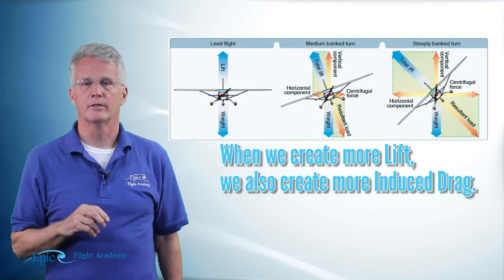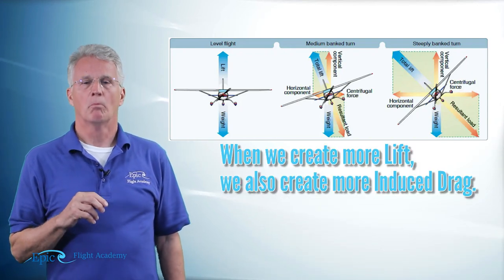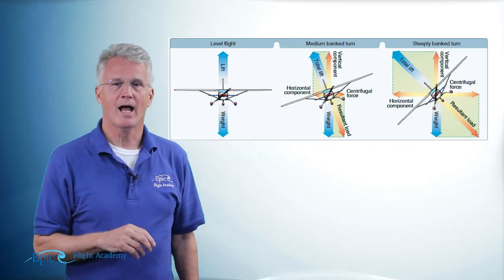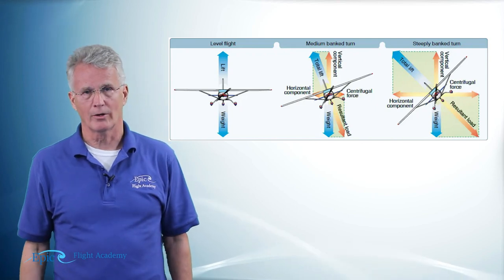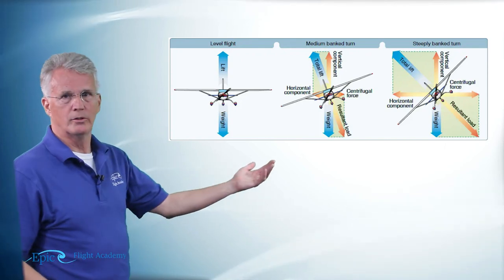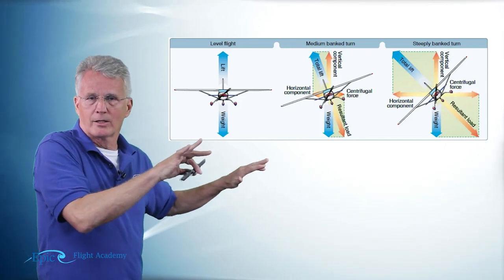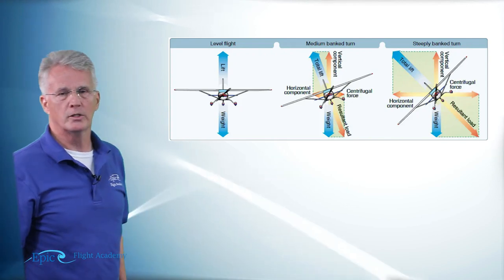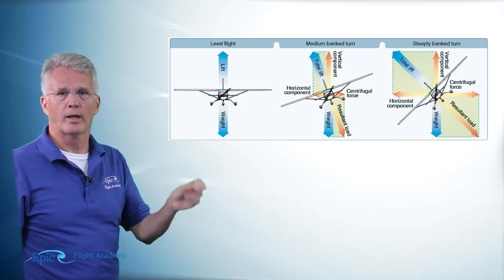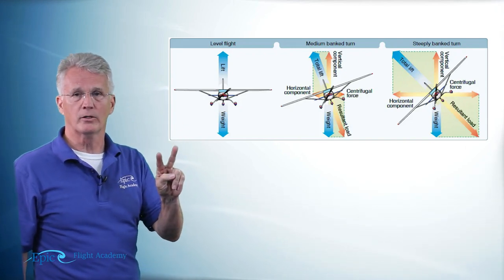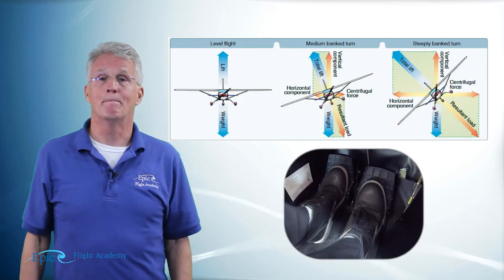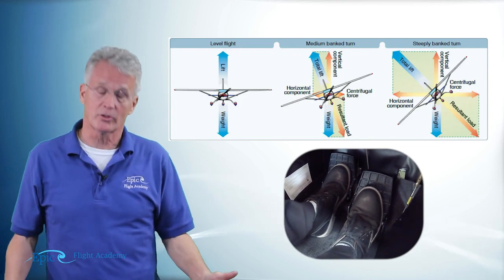When we create more lift, we create more induced drag. Now when that high wing in that turn is creating more lift, it is creating more induced drag and it's being pulled back, yawing the nose of the airplane to the outside of the turn. Here's where I need to apply my second primary flight control — the rudder — to yaw that nose of the airplane back to the left. In this case, we're in a left turn.